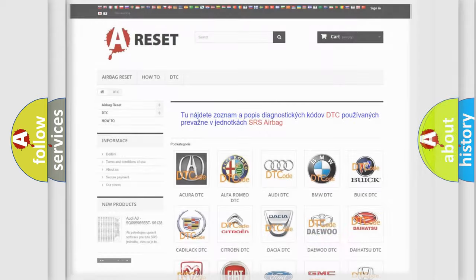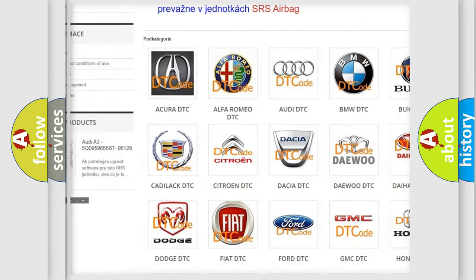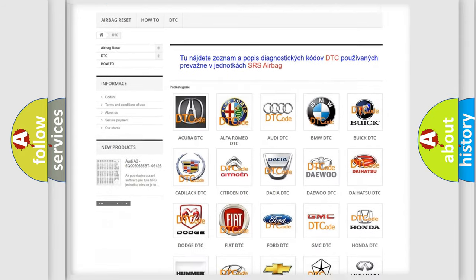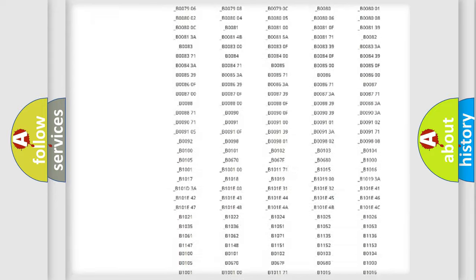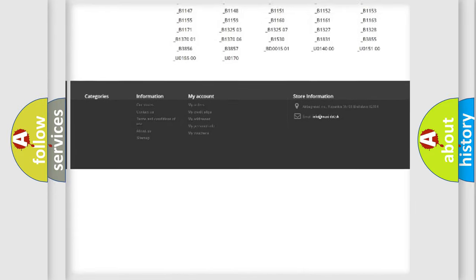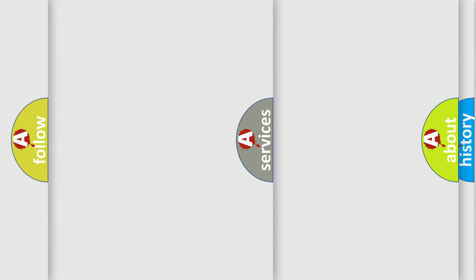Our website airbagreset.sk produces useful videos for you. You do not have to go through the OBD2 protocol anymore to know how to troubleshoot any car breakdown. You will find all the diagnostic codes that can be diagnosed in Chevrolet vehicles, and many other useful things.